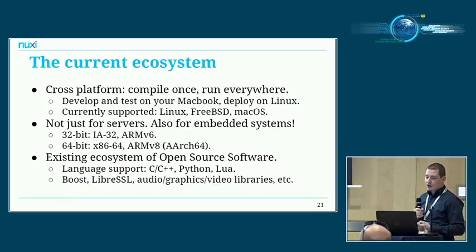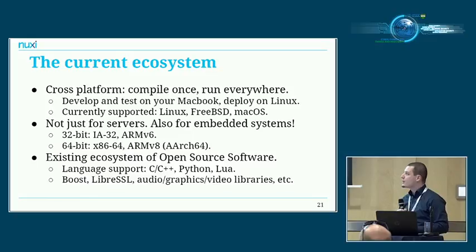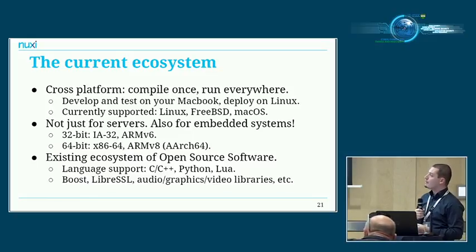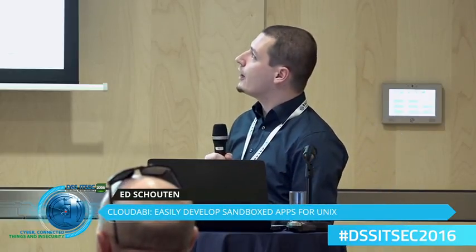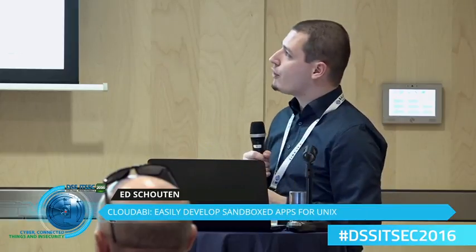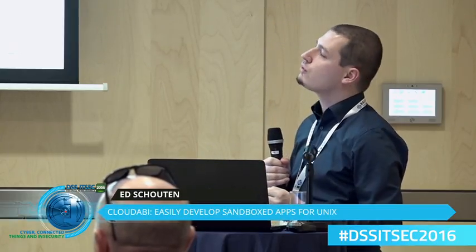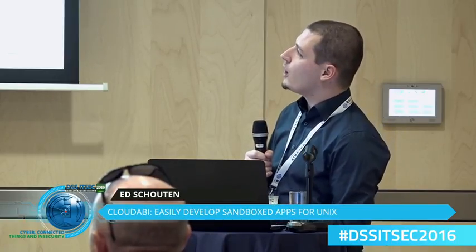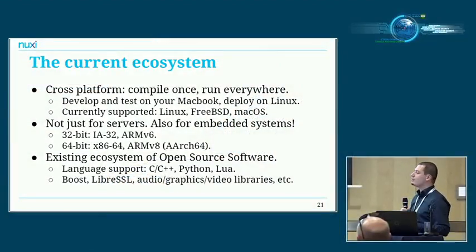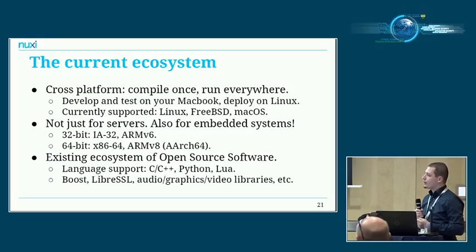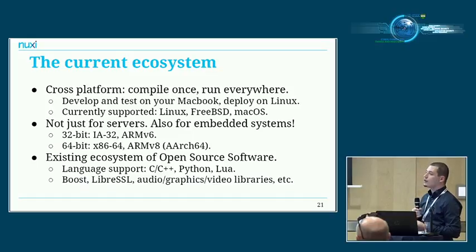A couple of other things worth mentioning: Cloud ABI is cross-platform. The binaries you get from Cloud ABI are the same across every platform, so you can compile software on your MacBook, run the tests there, and then run it on your Linux servers. FreeBSD support is even upstream — FreeBSD 11, which came out recently, supports this out of the box. There's support for multiple hardware platforms ranging from server CPU architectures to embedded: 64-bit Intel, 64-bit ARM, and also 32-bit flavors of those. There's also a large set of already-ported software — crypto libraries, frameworks like Boost, audio, graphics, and video libraries — and you can write sandbox code in C, C++, Python, and Lua.